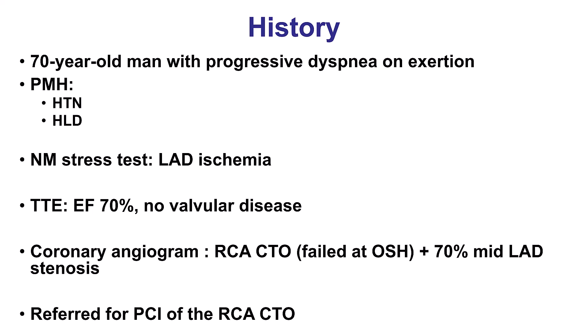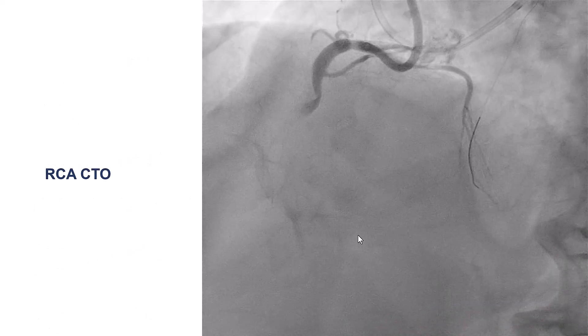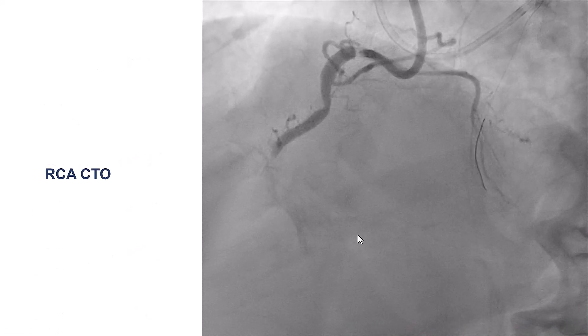The patient was a 70-year-old gentleman with progressive exertional dyspnea, which is frequently an angina equivalent, normal ejection fraction, CTO of the RCA with a mid-vessel lesion. There was an unsuccessful attempt on the RCA at a different hospital, and the patient was referred for PCI of the RCA CTO.